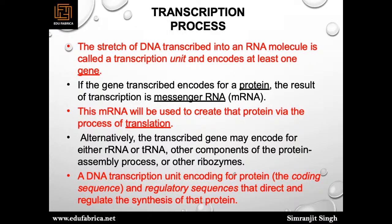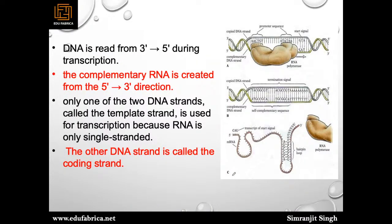Transcription results in an RNA complement that includes uracil instead of thymine. During this process, when RNA polymerase attaches to the complementary strand, DNA is read from 3 prime to 5 prime, and the complementary RNA is always created in the direction of 5 prime to 3 prime. Only one of the two DNA strands — called the template strand — is used for transcription, because RNA is a single strand. The other DNA strand is called the coding strand.